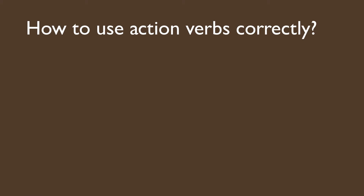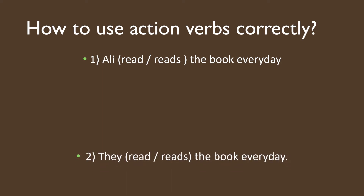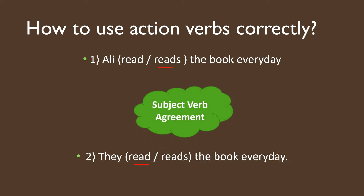Even though we have action verb and it's quite easy, to use it is not that easy because we have to follow the rules. Imagine if we have two sentences: number one, 'Ali read or reads the book every day'; second sentence, 'They read or reads the book every day.' The answer is: the first one is 'Ali reads' — you must add S to the verb. But for the second sentence, 'they read' — you choose the root verb without any S. Why? Because you have to follow subject-verb agreement, which is the rule where the subject needs to agree with the verb. We are going to learn subject agreement in detail on the next syllabus.